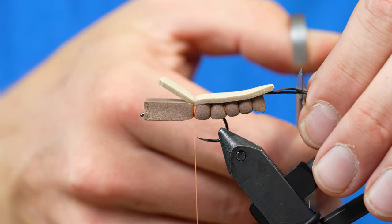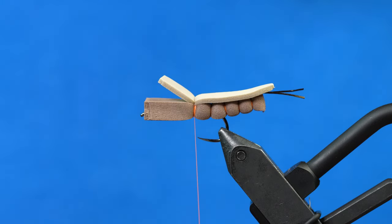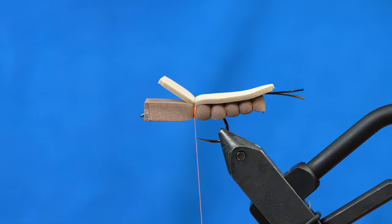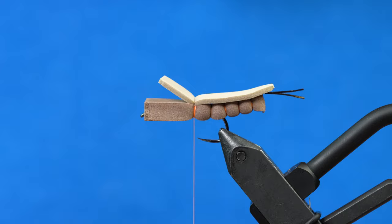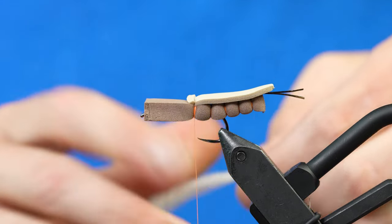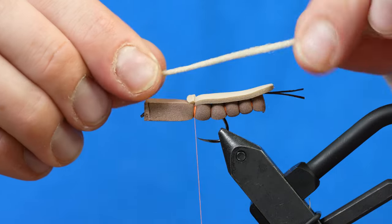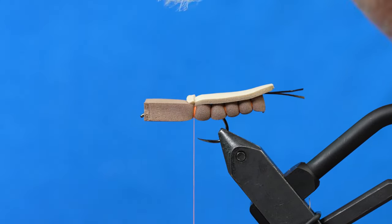Trim those tails just past the wing. And then our next step is going to be tying in our polywing. I'm using some beige EP fibers. I'll trim that back and get that out of the way. I'm going to measure this stuff to be about as long as the body.